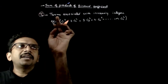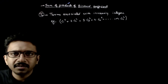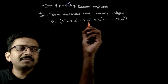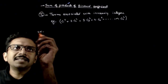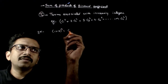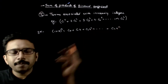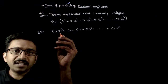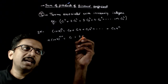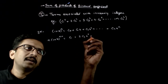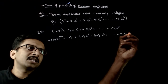In the next type, if you have terms associated with increasing integers — instead of c0² plus c1² plus c2² directly, you have c1² plus 2·c2² plus 3·c3² plus 4·c4², and so on — we consider one expansion (1+x)^n = c0 + c1·x + c2·x² + ... + cn·x^n and differentiate it: n(1+x)^(n-1) = c1 + 2c2·x + 3c3·x² + ... + n·cn·x^(n-1).